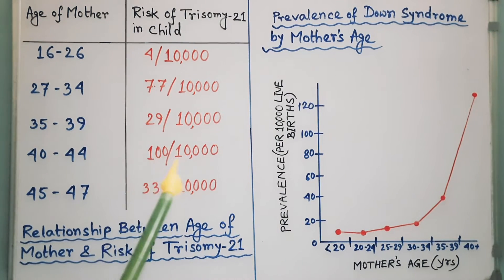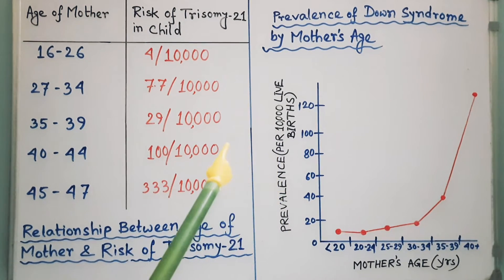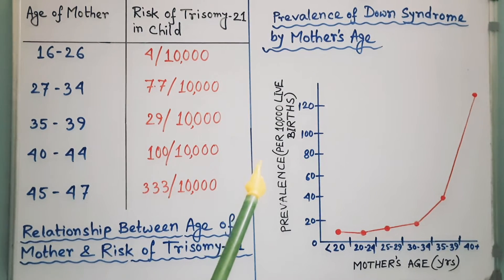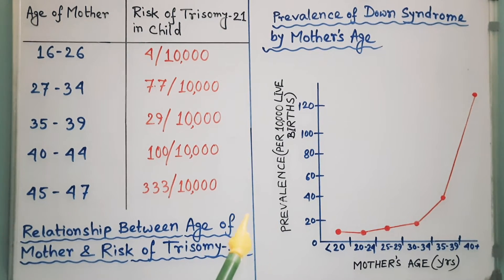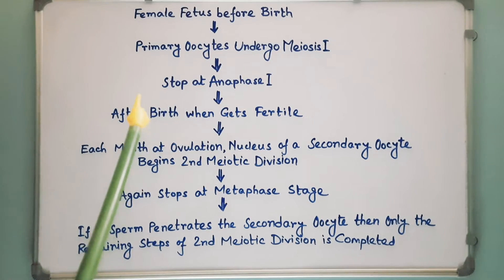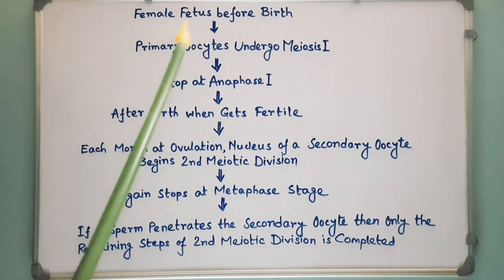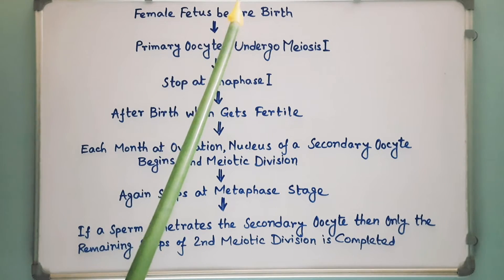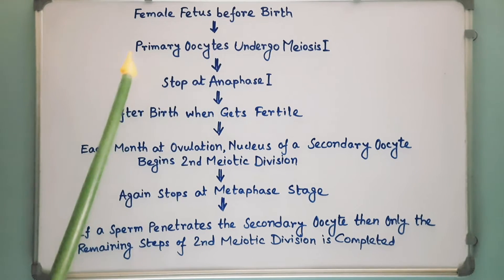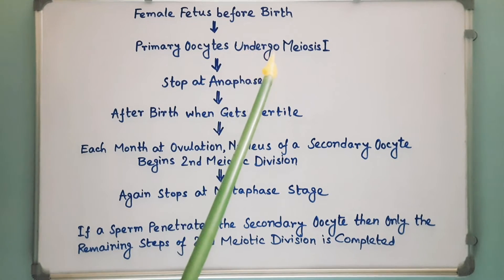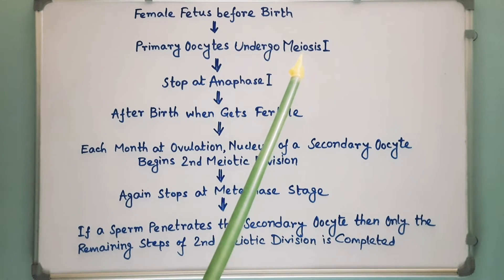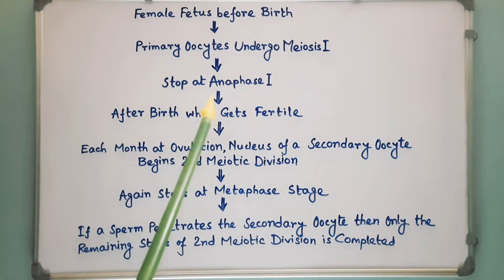Now, I will discuss why aged mothers have a high risk of giving birth to a Down syndrome child. During the development of a female fetus before birth, the primary oocytes in the ovary undergo meiosis 1, but stop at anaphase 1.